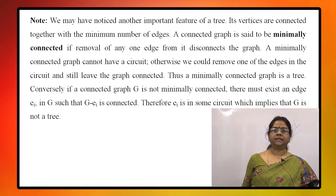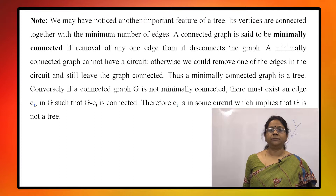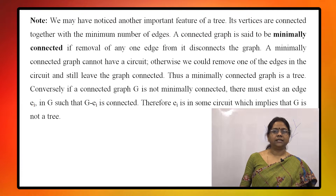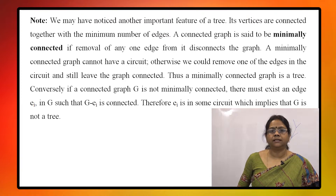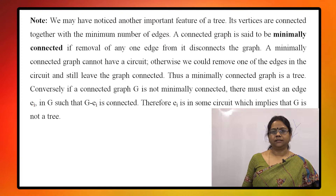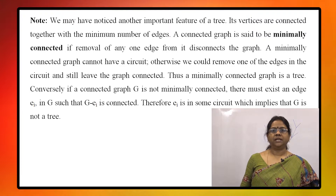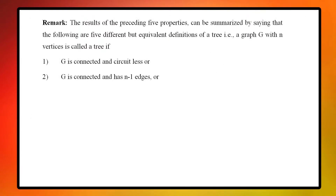Thus, a minimally connected graph is a tree. And a connected graph, if not minimally connected, there must exist an edge E_i in G such that removal of E_i from G — that is G minus E_i — will remain connected. So E_i must be in some circuit, which implies G is not a tree. Therefore, we can say that a tree is always minimally connected.